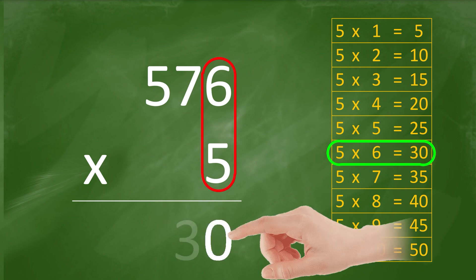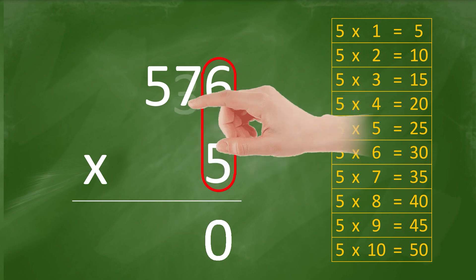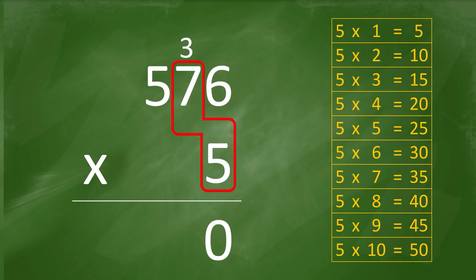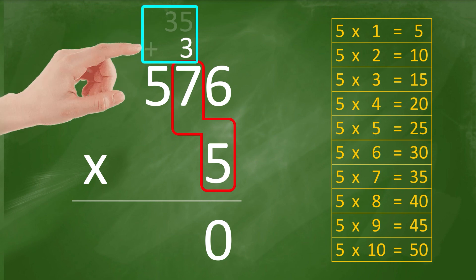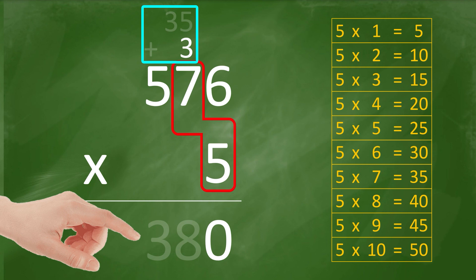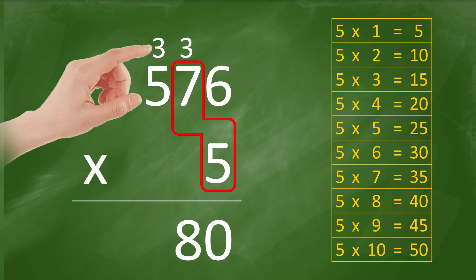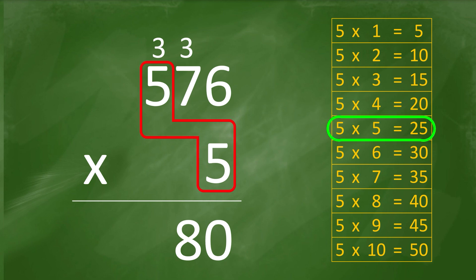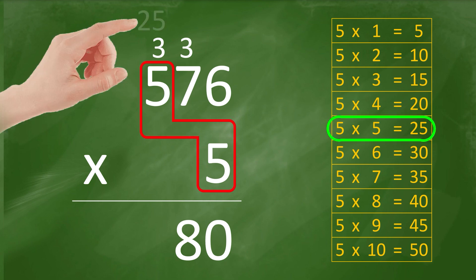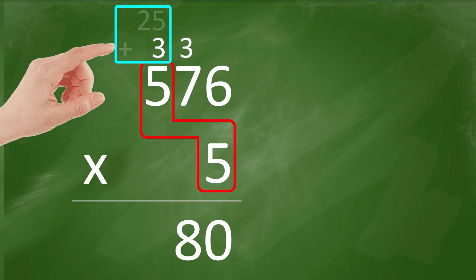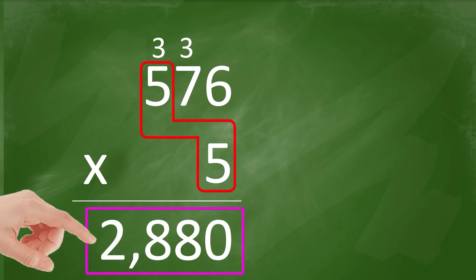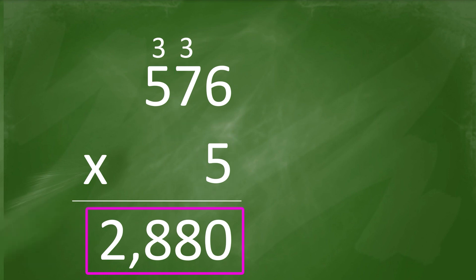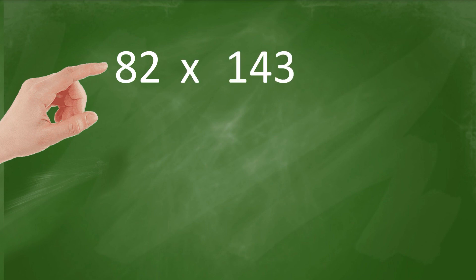5 times 6 equals 30 — 0 stays, carry 3. 5 times 7 equals 35, plus 3 equals 38 — 8 stays, carry 3. 5 times 5 equals 25, plus 3 equals 28. The answer is 2,880. Let's try another example: 82 times 143.